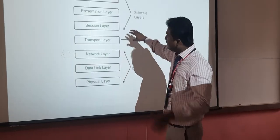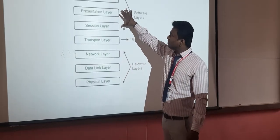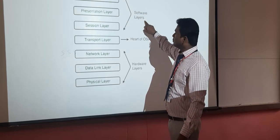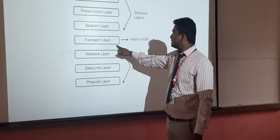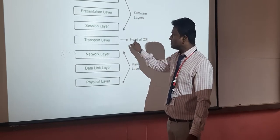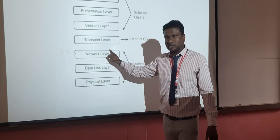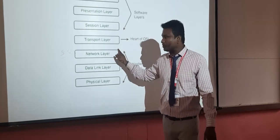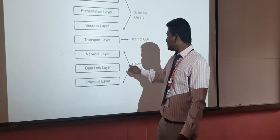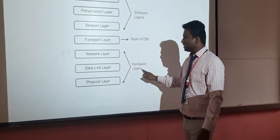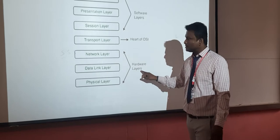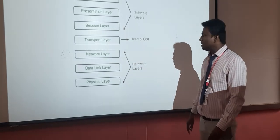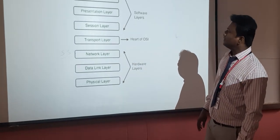The top three layers are the software layers, and the transport layer is the heart of OSI. TCP and UDP operations are performed in the transport layer. The bottom three layers are the hardware layers.